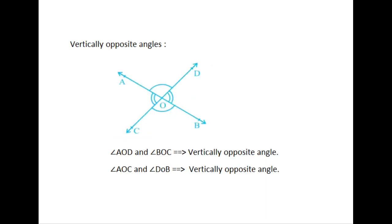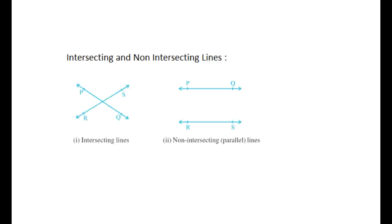When two lines AB and CD intersect each other at point O, there are two pairs of vertically opposite angles. They are angle AOD and BOC, and angle AOC and DOB. The figure shows intersecting lines and parallel lines. Note that the length of the common perpendicular at different points on these parallel lines is the same. This equal length is called the distance between two parallel lines.